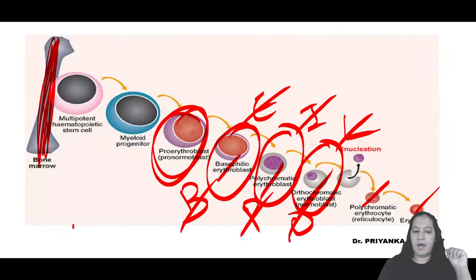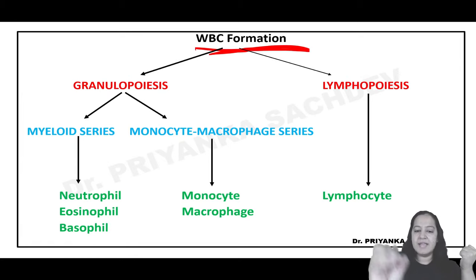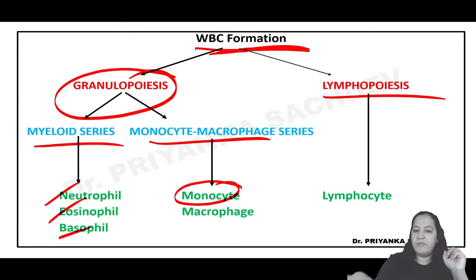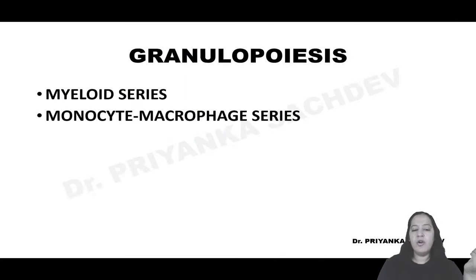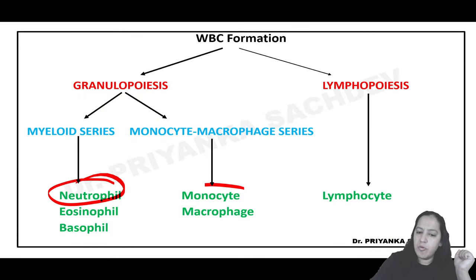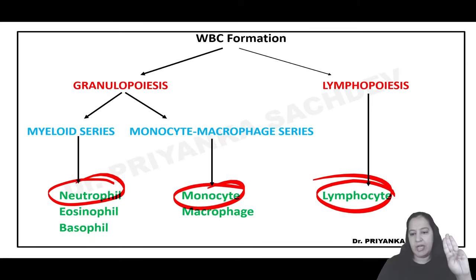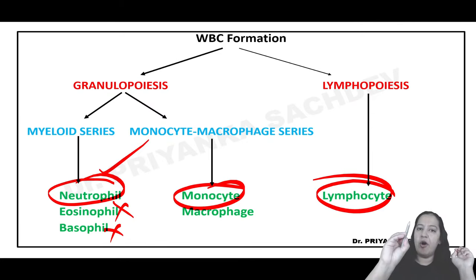Starting granulopoiesis - WBC formation. There are two streams: granulopoiesis, in which neutrophils, eosinophils, and basophils are formed from the myeloid series; and the monocyte-macrophage series, in which monocytes are formed. Lymphocytes are separate - in lymphopoiesis. I will teach you how neutrophils are formed, how monocytes are formed, and how lymphocytes are formed - three series. I will not teach basophil and eosinophil in detail as they are not heavily tested. The first precursor in the neutrophil pathway is myeloblast.